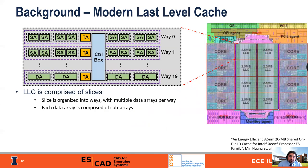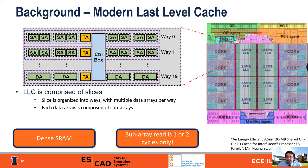Now let's take a look at a modern last-level cache. The last-level cache is comprised of several slices, and the slices and the cores are connected by some central interconnect. Within the slice, you'll find multiple ways, and each way is comprised of data arrays, which in turn are comprised of sub-arrays. Effectively, what we have here is a lot of dense SRAM. While accessing the slice may take several cycles, accessing a sub-array row only takes one or two cycles.